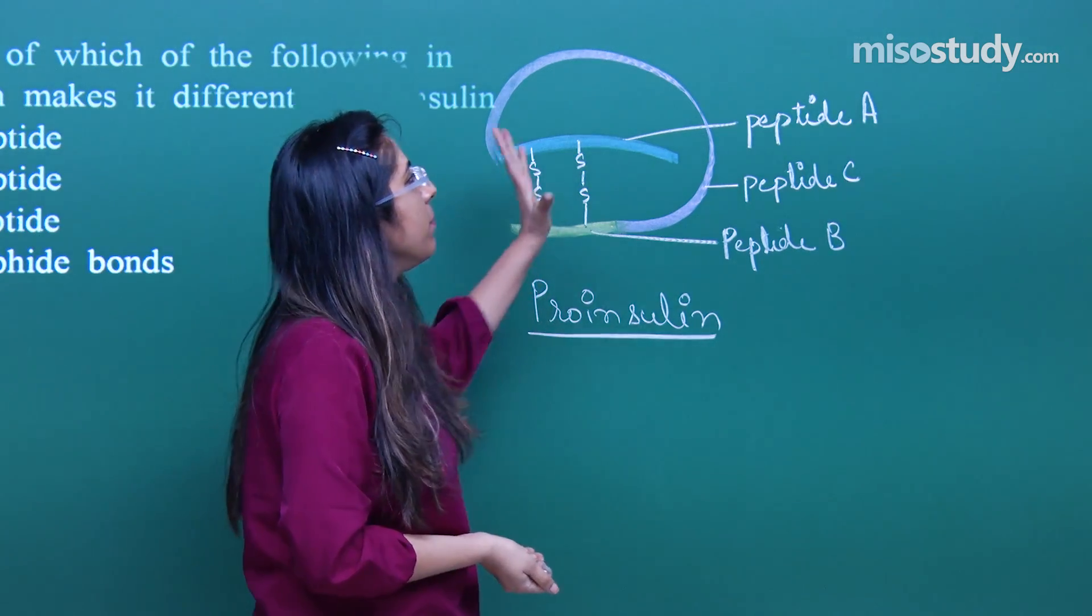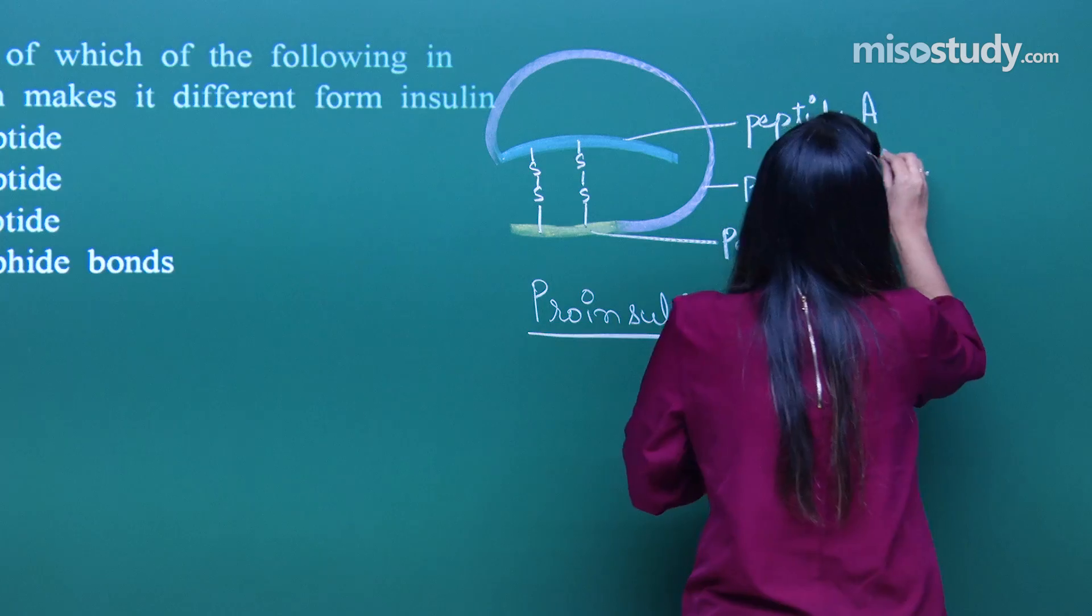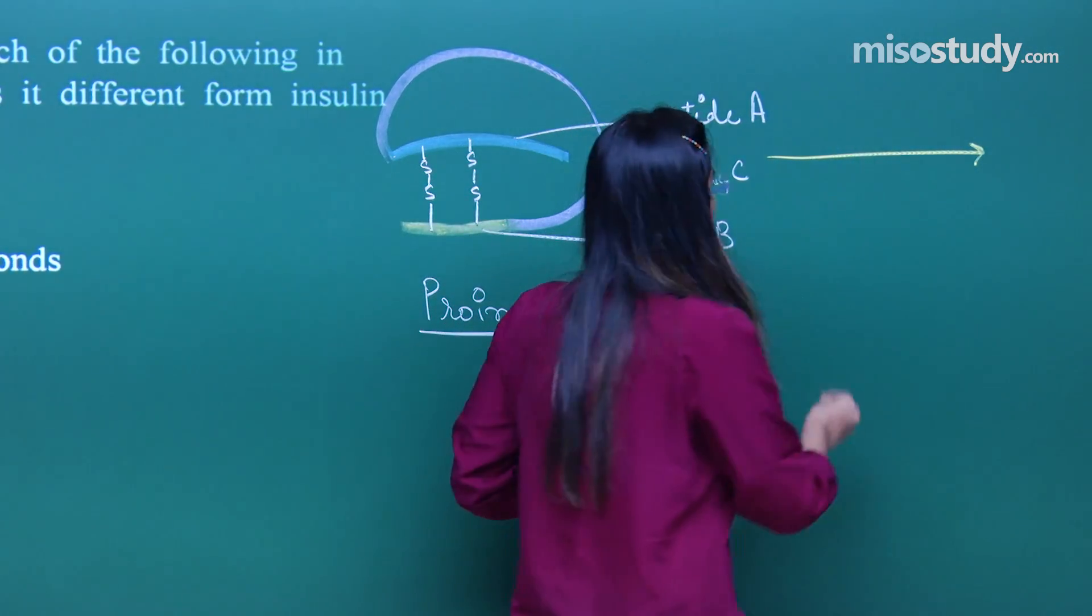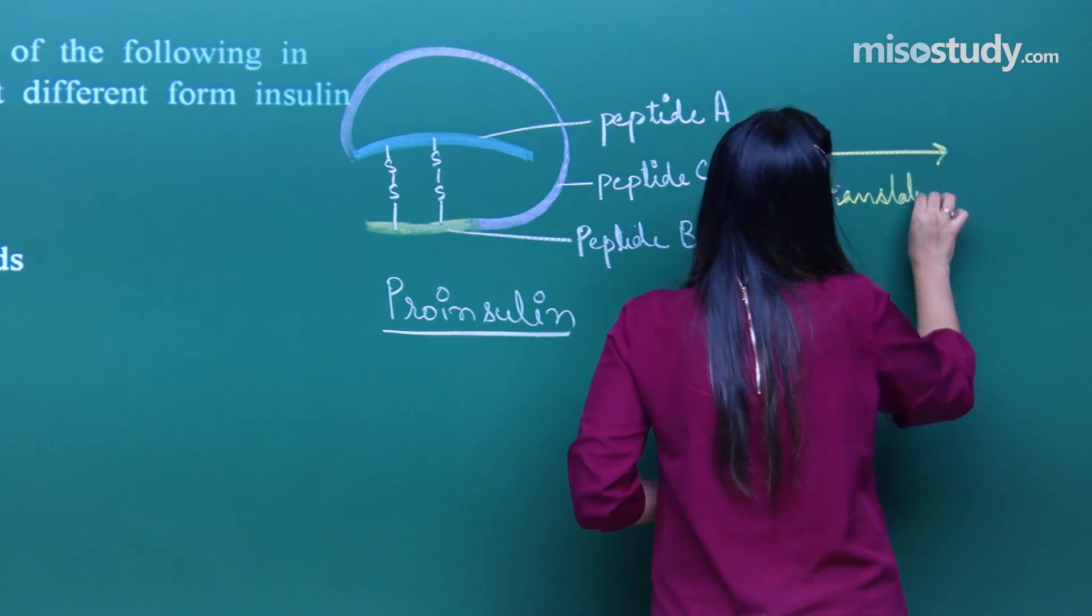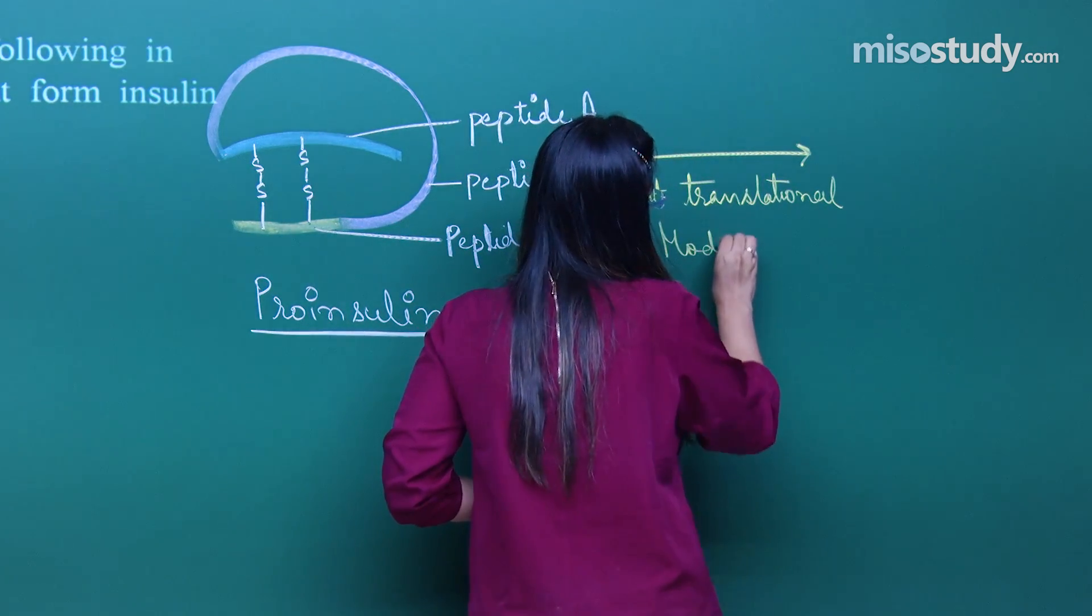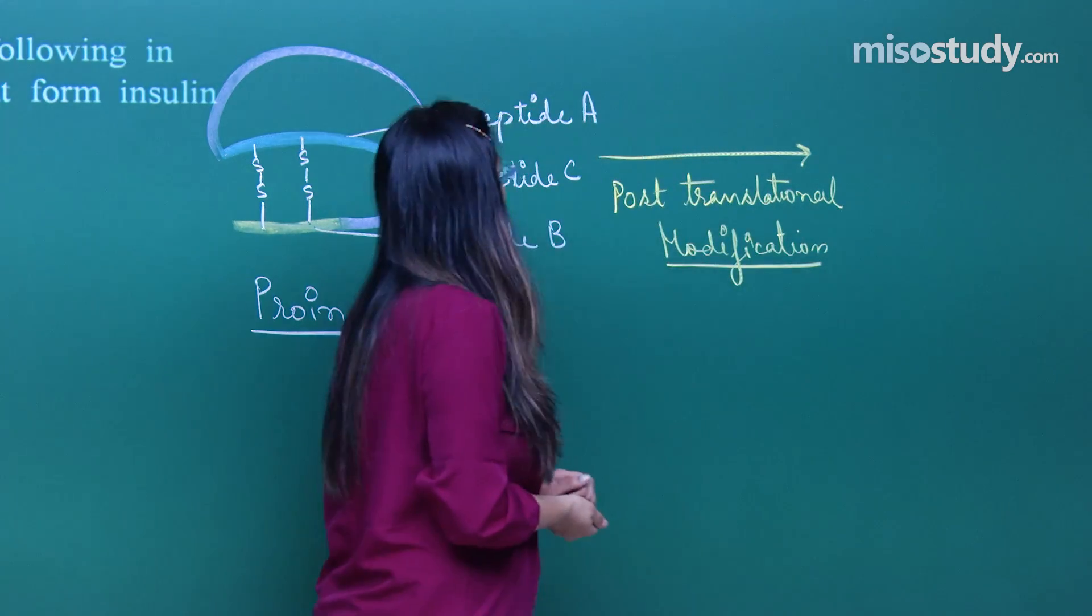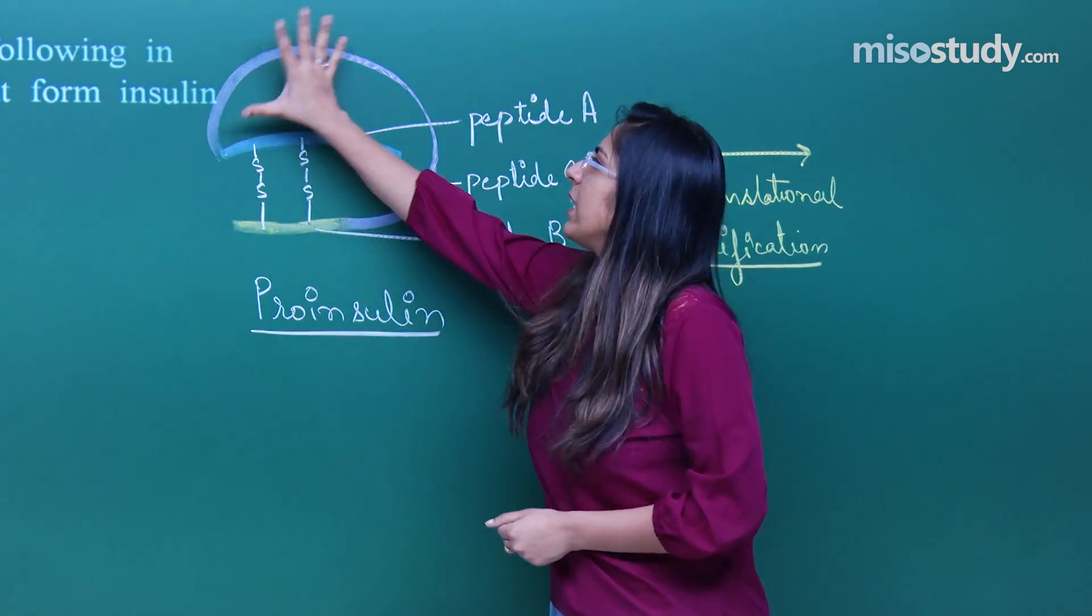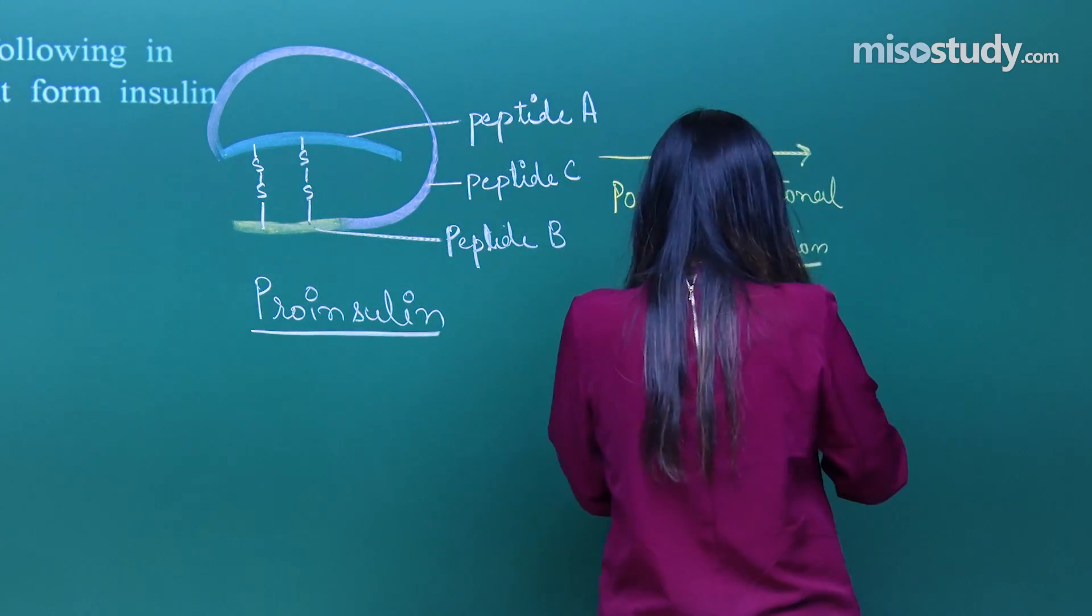Now what I have to do? I have to make it into a functional form. Now what will happen? The reaction that will occur is called post-translational modification. That means I have to convert this pro-insulin form into the active form. Now what will happen? This C chain which is present like this, this peptide chain will be removed. Now let us see how they are removed.